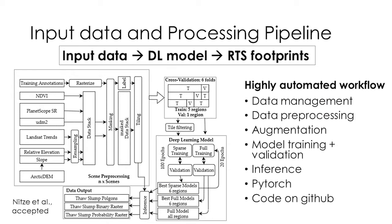Based on successful application of these image analysis workflows, we set up a data processing pipeline which uses remote sensing input data to create a deep learning model that outputs retrogressive thaw slump footprints in an automated manner. We created a highly automated workflow that takes care of data management, data processing, and augmentation — which means adapting the training imagery to increase the training size, introduce noise and rotation, and better generalize the model to produce a more transferable result. The workflow also contains automated model training, validation, and inference — the final application of the model to output footprints from unknown areas to apply the model over large regions.